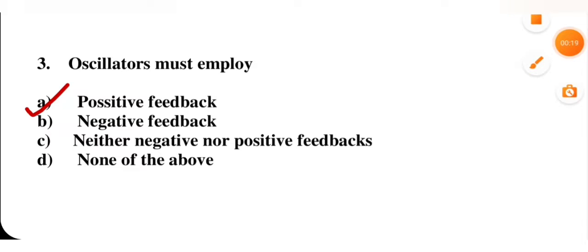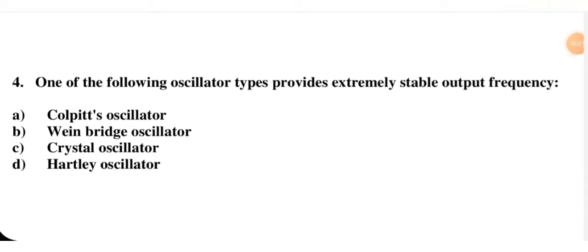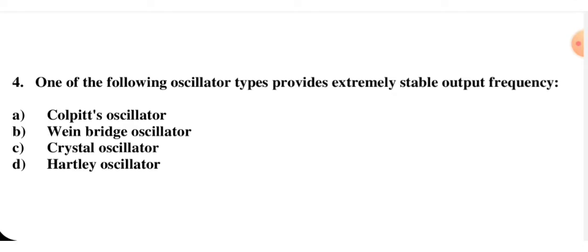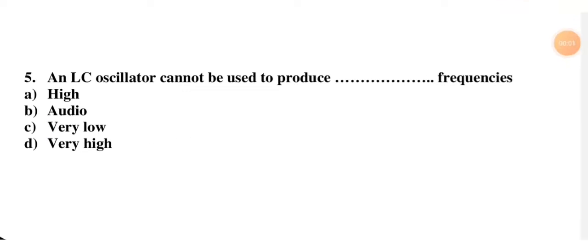Next question: which of the following oscillator types provides extremely stable output frequency — Colpitts oscillator, Wien bridge oscillator, crystal oscillator, or Hartley? Please remember, when we need a stable clock frequency — for example in microprocessors — we use a crystal oscillator. So option C is the right option. Next: an LC oscillator cannot be used to produce very low frequencies, so the correct option is very low frequency.